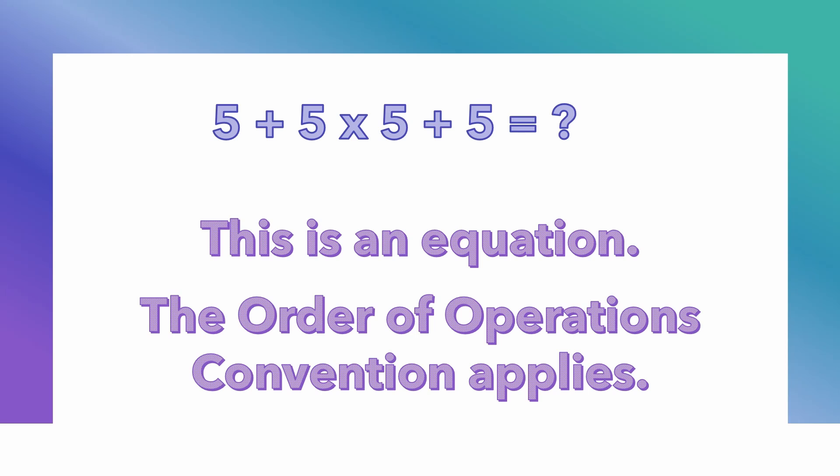So we've got 5 plus 5 times 5 plus 5. First of all, let's get one thing straight: this is an equation. I see a lot of confusion about that where people say it's not an equation. Equations have equal signs in them — they're equating two different expressions. A question mark could represent a variable, like A, representing a number like 50, 100, or 10 million. So yes, this is an equation.